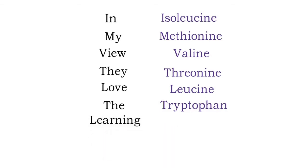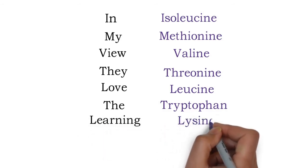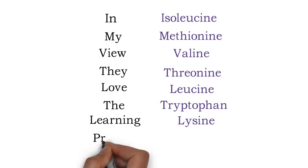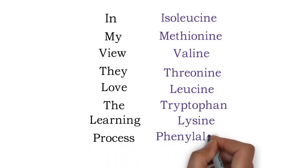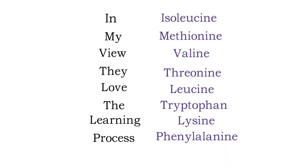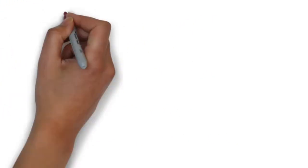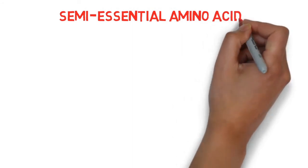Next, L is for leucine, T is for tryptophan, L is for lysine, and P is for phenylalanine. So the whole mnemonic is 'In My View They Love The Learning Process' — isoleucine, methionine, valine, threonine, leucine, tryptophan, lysine, and phenylalanine.